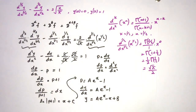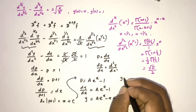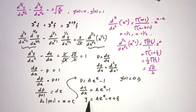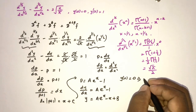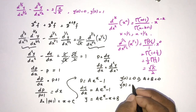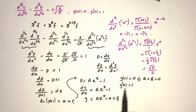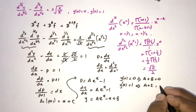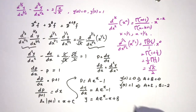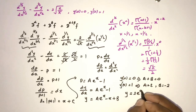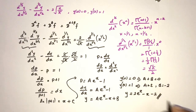Applying the initial conditions: y(0) = 0 gives A + B = 0, so B = −A. And y'(0) = 1 gives A·e^0 − 1 = 1, so A − 1 = 1, meaning A = 2. Therefore B = −2. The final solution is y = 2e^x − x − 2.